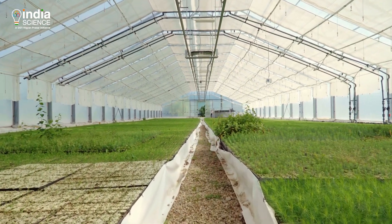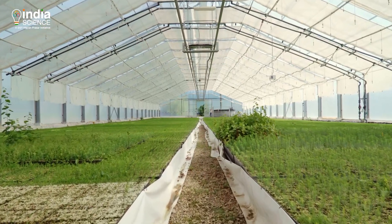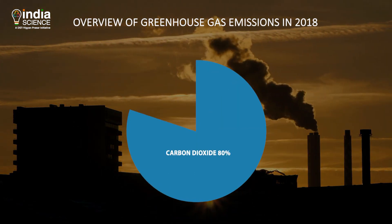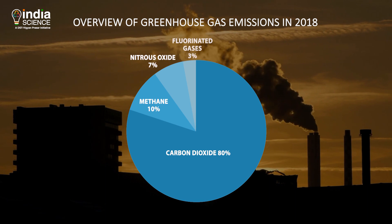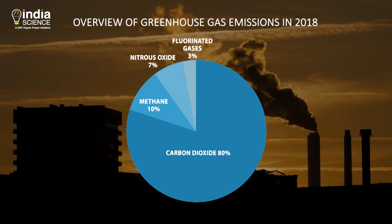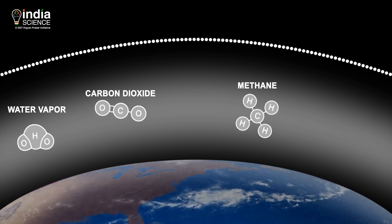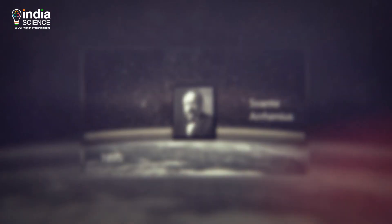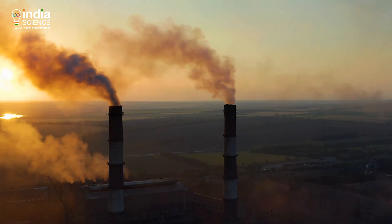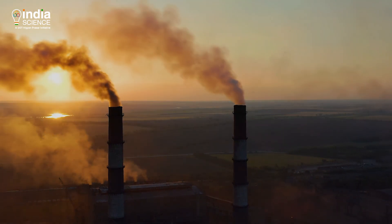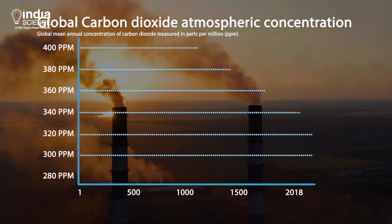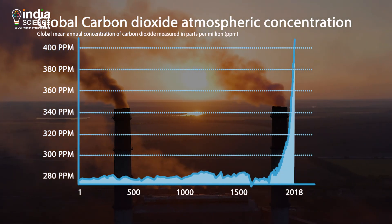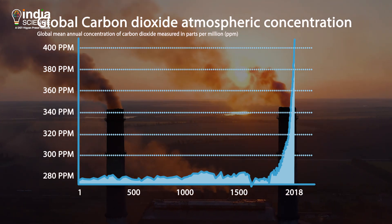The name comes from greenhouses because they are also based on the same phenomenon. The major contributor to the greenhouse effect among all gases is carbon dioxide — almost 80% contribution, with the rest 20% by other gases combined. This greenhouse effect is what keeps the Earth's climate pleasant. But in 1895, Svante Arrhenius discovered that humans could affect the greenhouse effect. This is a graph which shows the emission of carbon dioxide in the last 2,000 years. The level of carbon dioxide has gone up and down over the Earth's history, but you can clearly see a spike after the late 1800s.